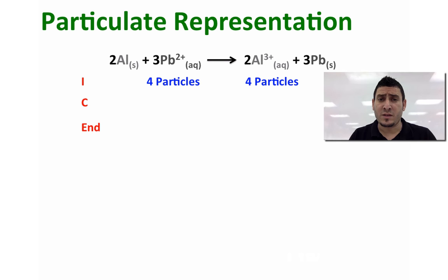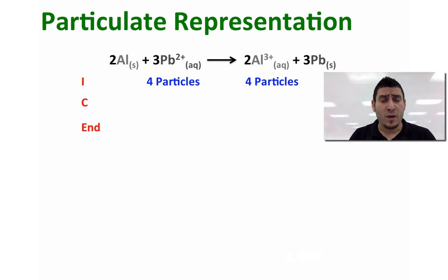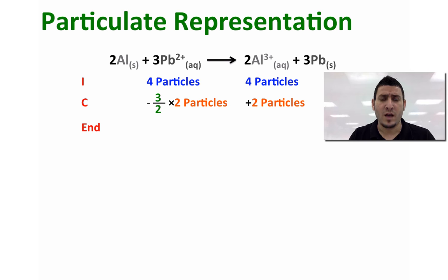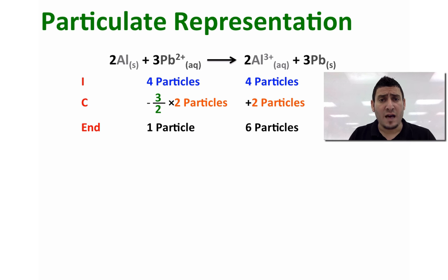To explain the particulate representation we can use an ICE table as well. Initially we had 4 particles of each. Since 1 molar corresponds to 4 particles, the change of 0.5 molar will correspond to 2 particles. Therefore the number of particles of Al³⁺ will increase by 2, and the number of particles of Pb²⁺ will decrease by (3/2) × 2 particles — again, 3/2 is the molar ratio between lead and aluminum. At the end we will have 6 particles for aluminum and 1 particle for lead.